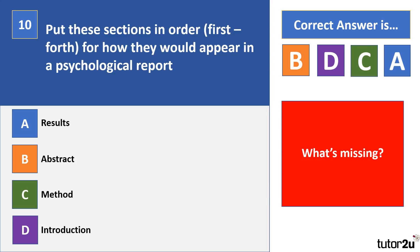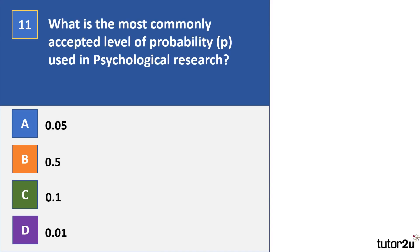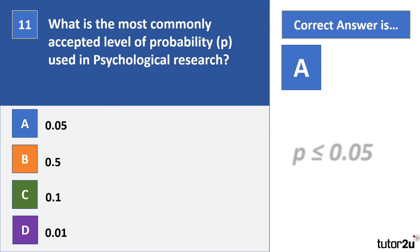Question 11: What is the most commonly accepted level of probability used in psychological research? Pause the video. Right, your correct answer there is A.